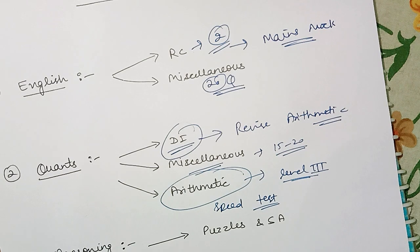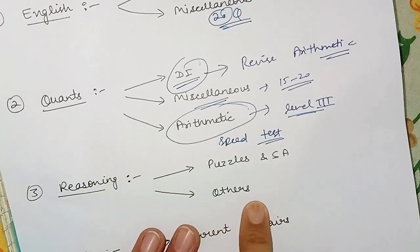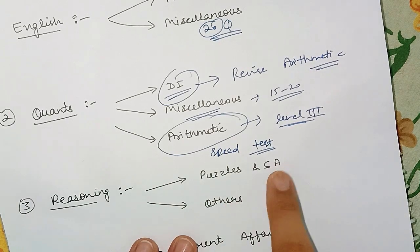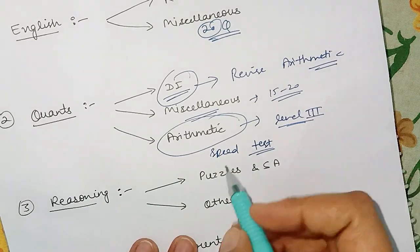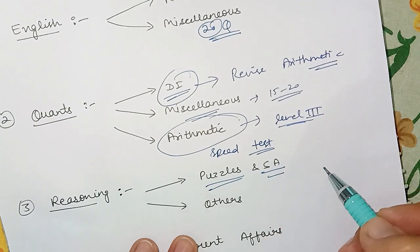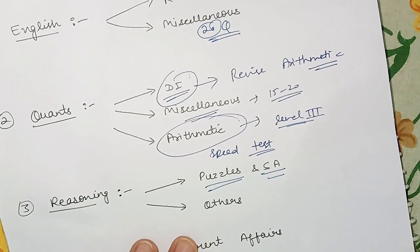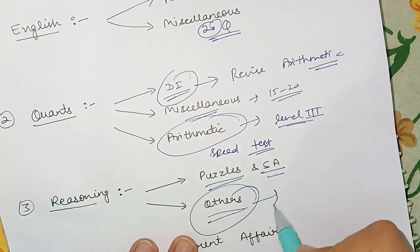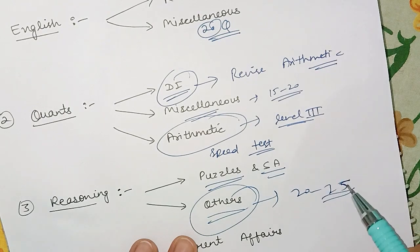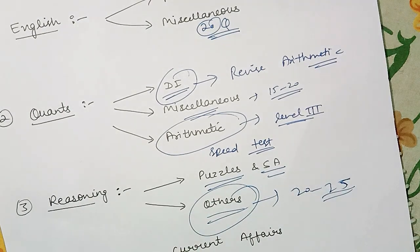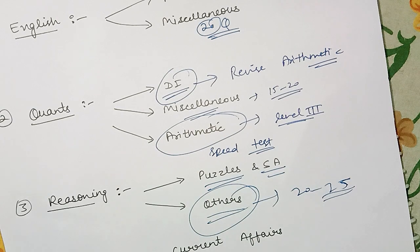Then there is Reasoning. In reasoning there are two sections: puzzles and sitting arrangement, then the other miscellaneous questions. For puzzles and sitting arrangement I would suggest you to practice on daily basis 2 to 3 mains level puzzles and 2 to 3 mains level sitting arrangements. Then the other questions you can practice 20 to 25 based on the length of the questions and based on your time, but minimum 20 questions should be practiced.